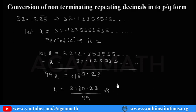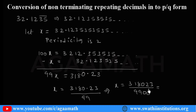Simplifying: x equals 18023 by 99. You cannot simplify this further, so this is the p by q form. x is nothing but 32.12353535 and so on, so it equals 18023 by 99. This is how we converted this non-terminating repeating decimal into p by q form.